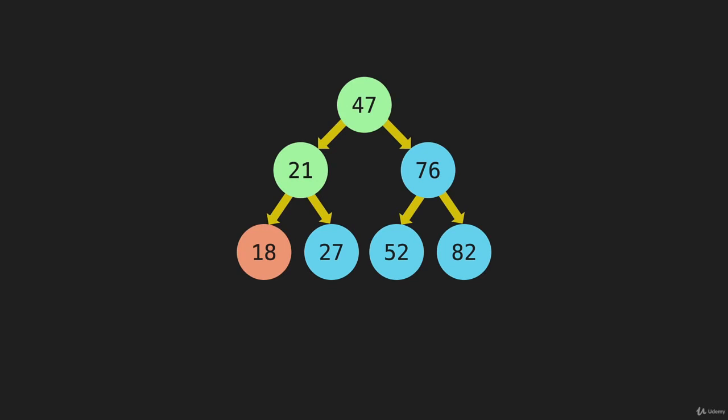Then we come back up to the 21. The 21 has gone left when it went to the 18. Now it's going to go right to the 27. The 27 is going to try to go left and try to go right — there are no items there — so it will write its value to the array. Now we come back up to the 21. It has gone left to the 18 and right to the 27, and now it can write its value to the array.